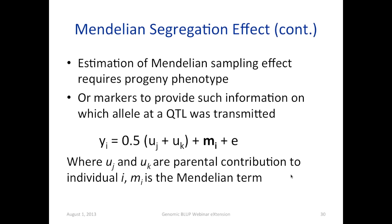Estimation of the Mendelian sampling effect requires progeny phenotype, or we can use markers to provide information on which allele at a QTL was transmitted. If we model the breeding value of an individual, it would be the summation of the mid-parent breeding values plus the Mendelian segregation effect plus an error term. In the equation, mu sub-j and mu sub-k are the parental breeding values, and their average represents a large contribution to the individual breeding value.